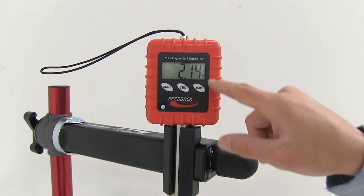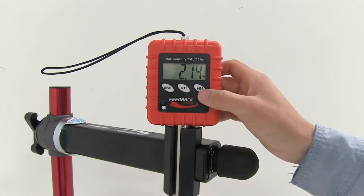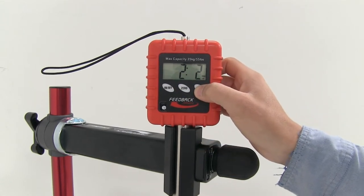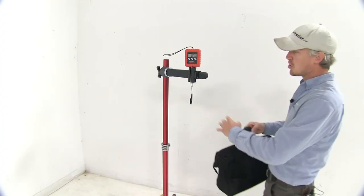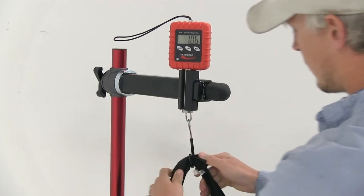It's got an easy-to-read LCD screen that'll display pounds, ounces, and kilograms. It measures in precise 10-gram increments.